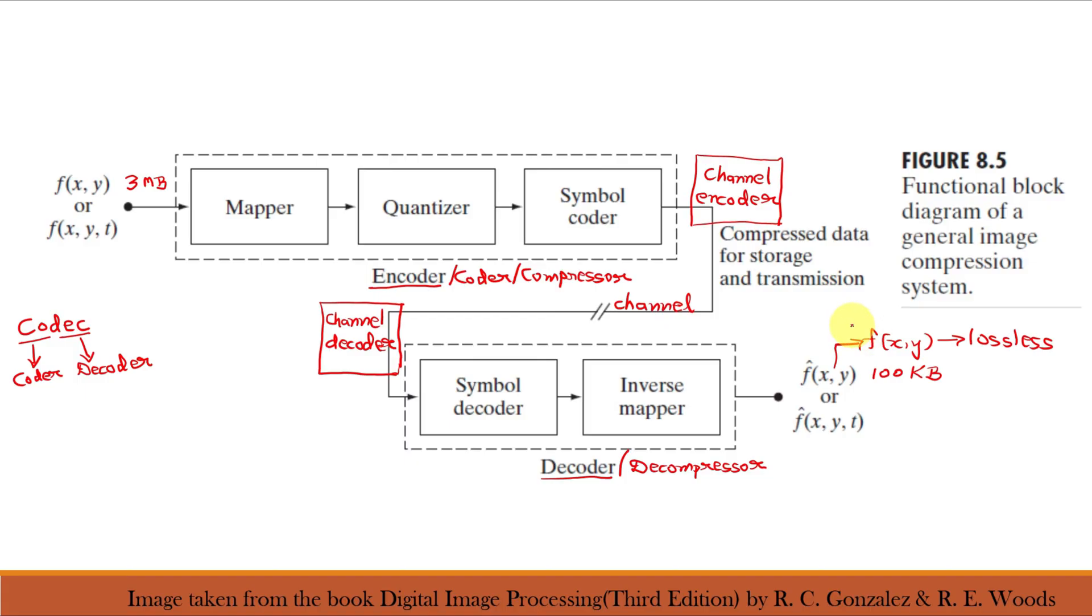In our previous video class, we understood what is lossless compression and lossy compression. If it is not the exact replica of the input, some level of distortion is present in the reconstructed image. For still images, we use f(x,y), while for videos, we use f(x,y,t) where t represents time.